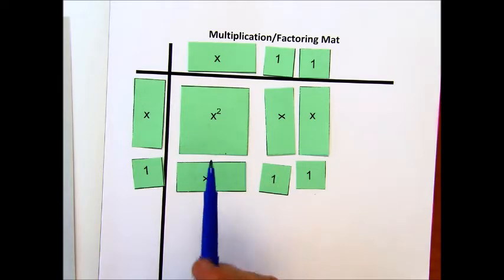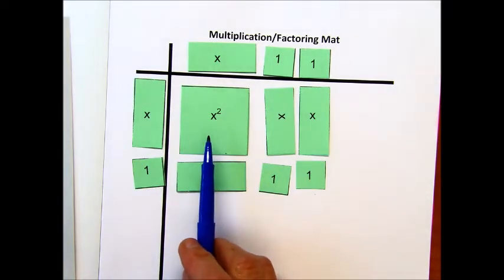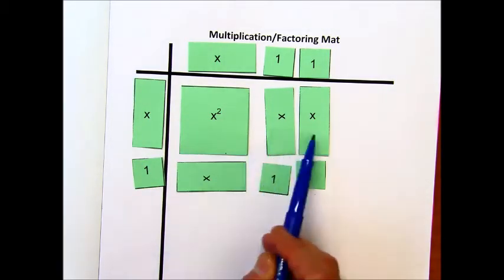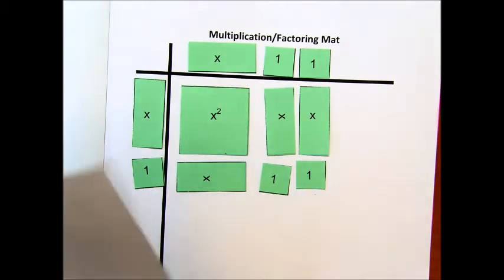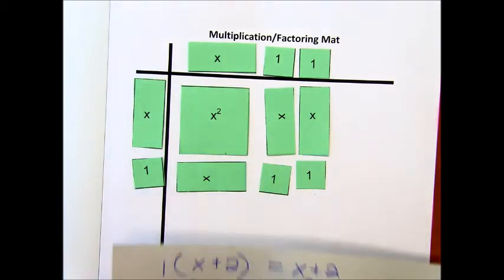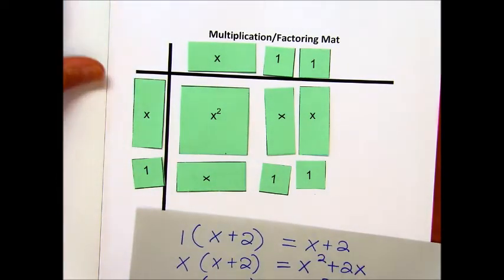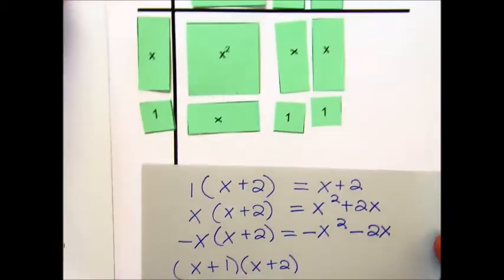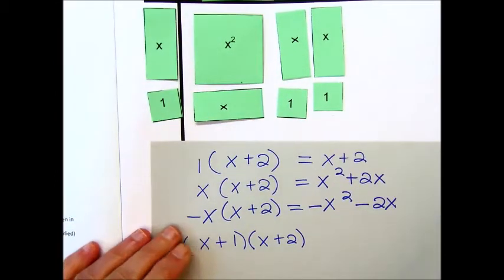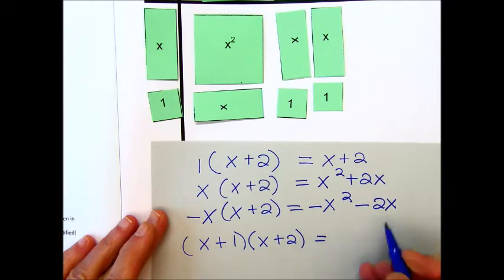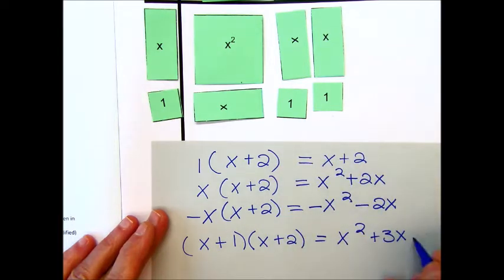If you notice here, we have an x squared, 3x's. Let me move this up. So, x squared plus 3x and then 2 plus 2.